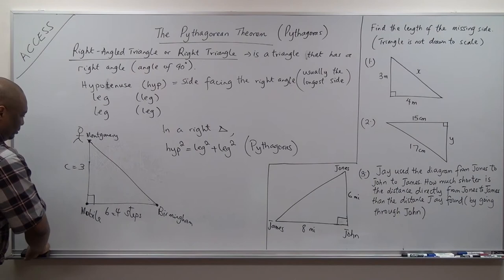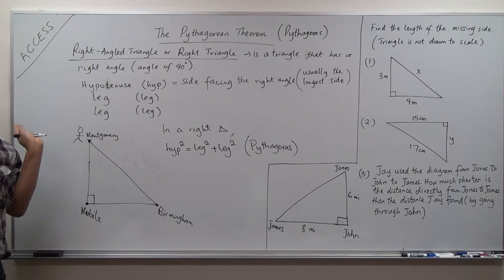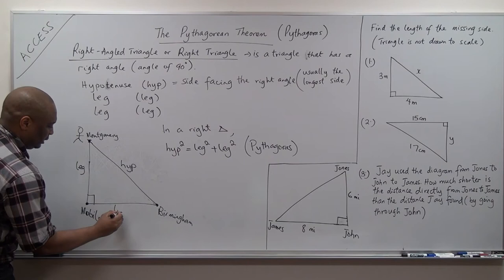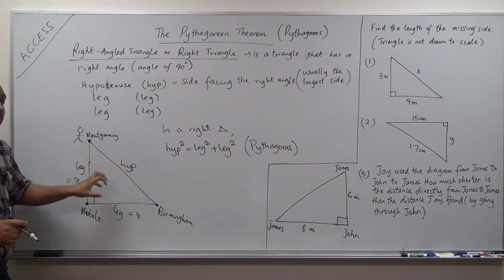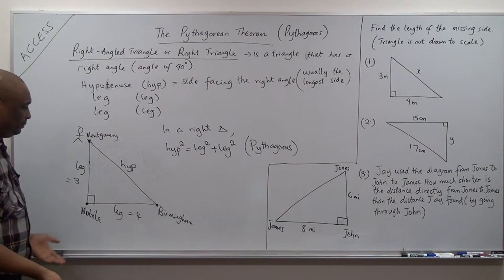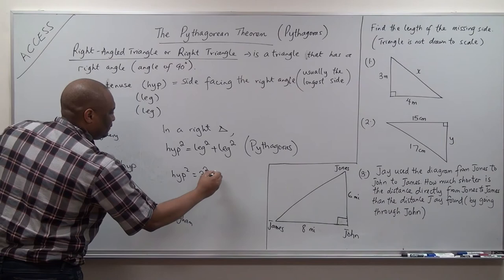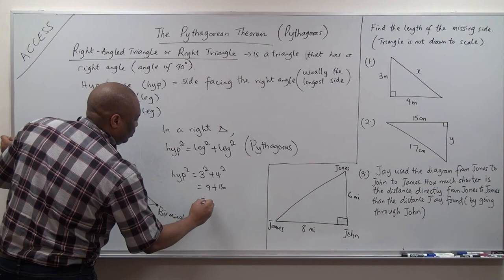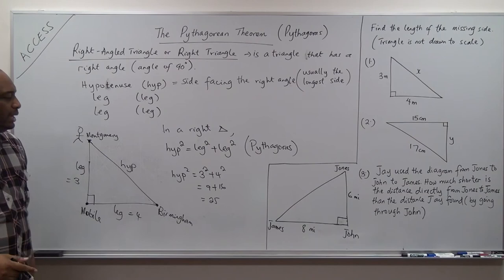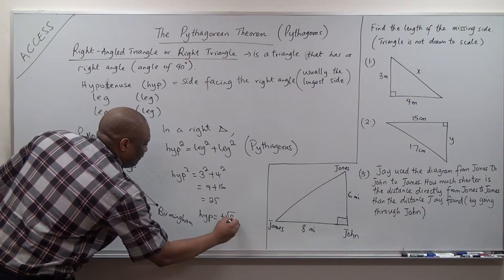That's why I use: identify the hypotenuse, identify the two legs. This is the hypotenuse, leg, leg. When you took three steps and four steps, the leg here is three, the leg here is four. Five squared equals three squared plus four squared, which is nine plus sixteen, which is twenty-five. The hypotenuse is the positive square root of twenty-five, which is five steps.